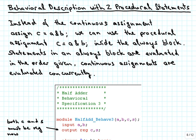To see how that works, we now want to make a behavioral description which has two procedural statements as opposed to just one. So instead of the continuous assignment for the carry — assign c = a & b — we can use a procedural assignment, which is simply c = a & b without the assign keyword in front of it, and we put that inside the always block.